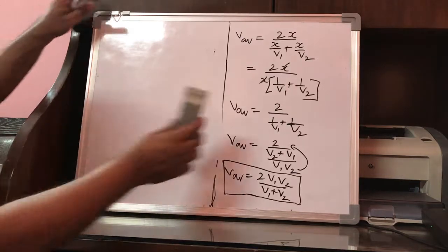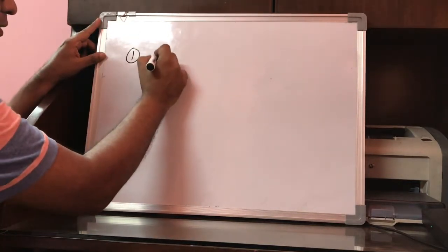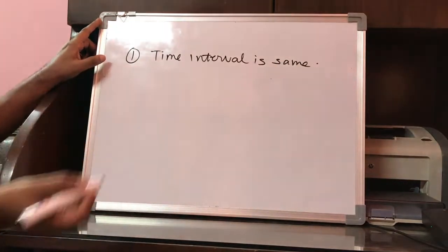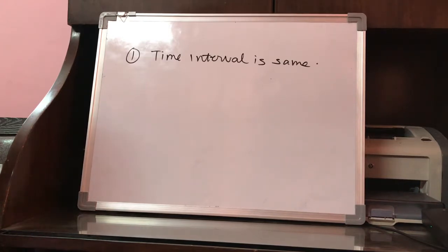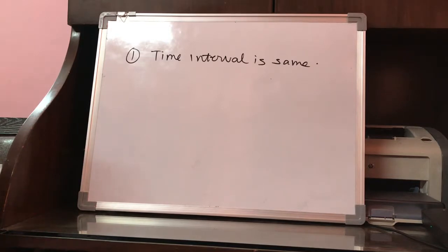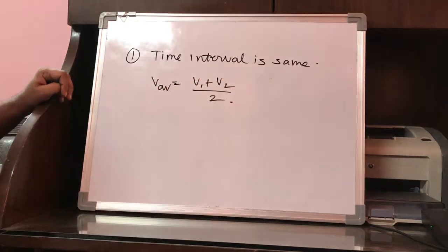There is a very important concept here. Basically there are two kinds of problems on average speed. In the first type, the time interval is the same — for example, a body travels with speed v1 in the first half time and speed v2 in the second half time, or a car travels at 40 km/h for the first one hour and 50 km/h for the second one hour. In those situations, the average speed equals v1 plus v2 divided by 2.